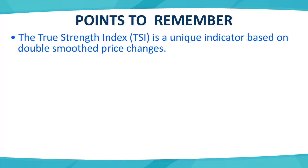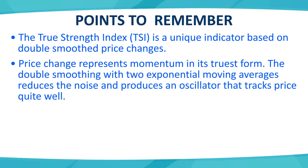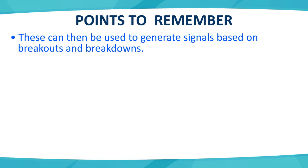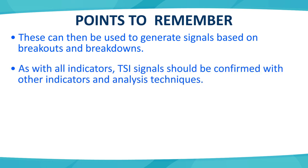Moving to points to remember — there are some important points from the whole session. The TSI is a double-smoothed indicator based on price change. The price change represents momentum. Double smoothing using EMAs reduces unwanted fluctuations dramatically, which we call noise. We can also draw support and resistance trend lines on TSI to pick signals. Breakouts and breakdowns can be easily identified. Every technical indicator, including TSI, should be used with other variables such as candlestick patterns, channel breakouts, and resistance and support levels visible in the underlying price chart.